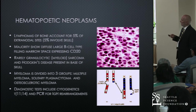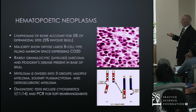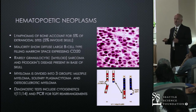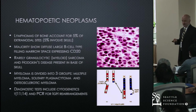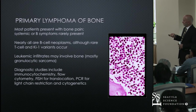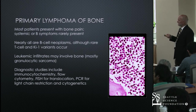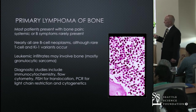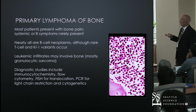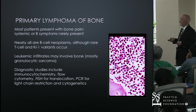Hematopoietic neoplasms are not uncommon here. Lymphomas of the bone can include large B-cell types, myeloid sarcomas, and Hodgkin's disease. Modern evaluation of any lymphoma uses gene rearrangement studies, cytogenetics, or next-generation sequencing to look at fine details of chromosomal aberrations. Primary lymphomas are almost always B-cell in origin, with very rare T and Ki-1 variants. Diagnostic studies include immunohistochemistry, flow cytometry, FISH for translocations, and PCR looking for light chain restriction.